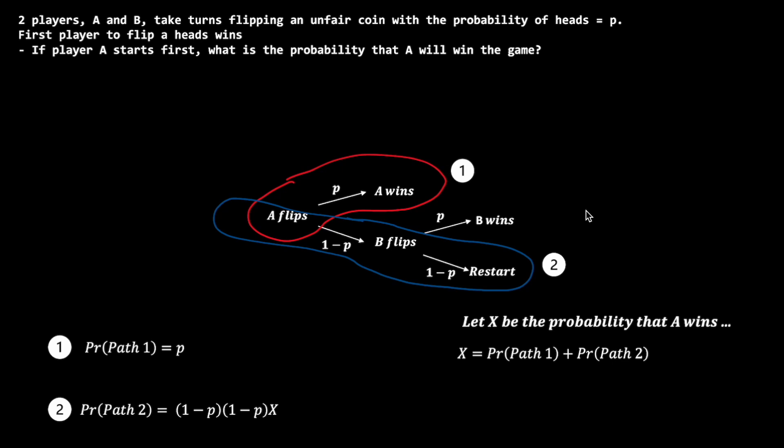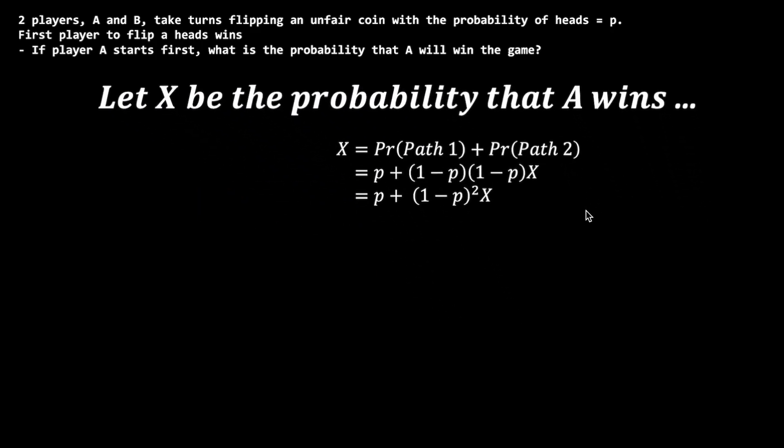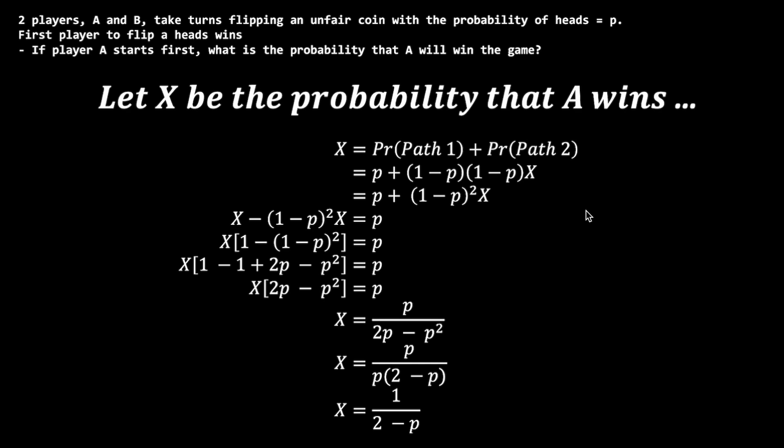That is to say, the probabilities of B flipping tails or heads are not influenced by what outcomes A had when flipping. Hence, these are static constant probabilities, and there is no need for conditional probabilities here. Plugging in the values, we have set up the recursive relation we knew existed from mapping out the outcomes in the diagram. Solving for X with some arithmetic, we get that X, the probability of A winning when A starts, is 1 over (2 minus P).